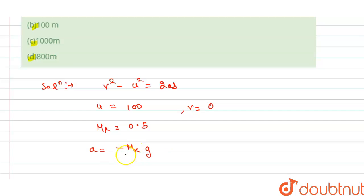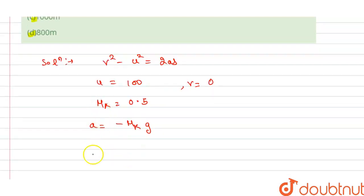So from this, if we put the values here, we get 0² - 100² = 2 times minus mu_k times g times s.